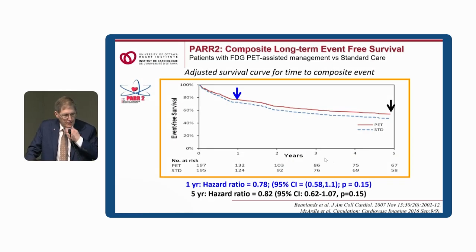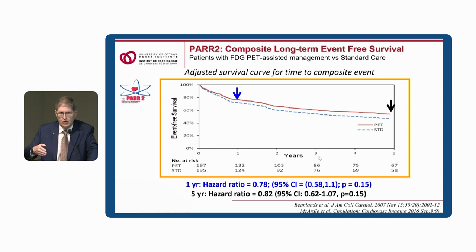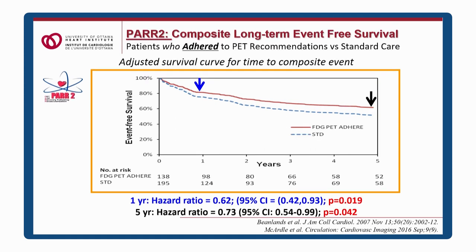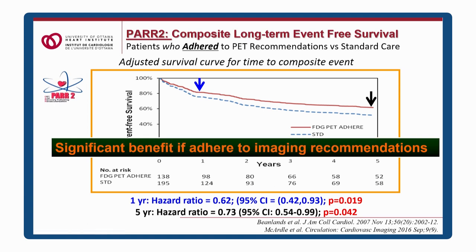We published a trial in 2007 and a follow-up shortly after, comparing FDG PET imaging being done versus not done to direct therapy. We showed a trend for outcome benefit when PET was used, but it did not reach statistical significance — a negative trial overall. However, about 25% of patients did not adhere to imaging recommendations. In a post-hoc analysis, we demonstrated outcome benefit when recommendations were followed, suggesting significant benefit when you adhere to imaging guidance.